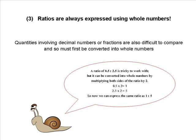So a ratio of 0.5 to 2.5, which is tricky to work with, can be converted into whole numbers by multiplying both sides of the ratio by 2. That would give us 0.5 times 2, which is 1, and 2.5 times 2, which is 5.